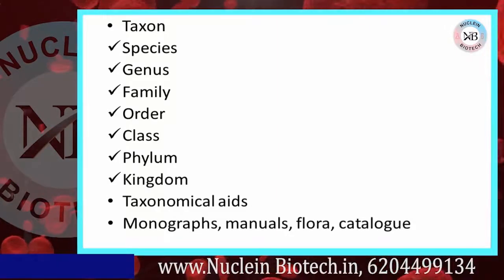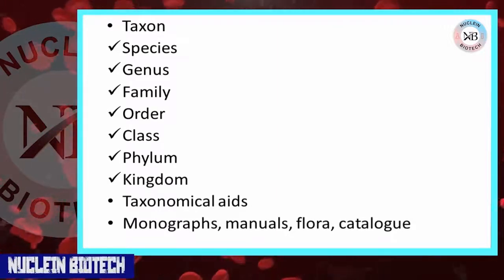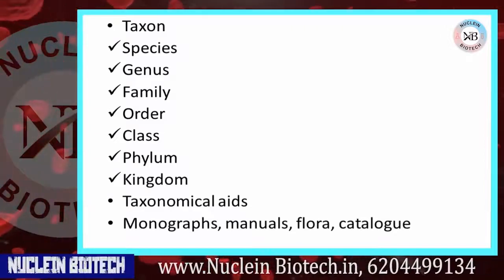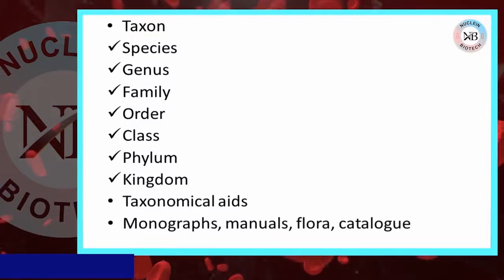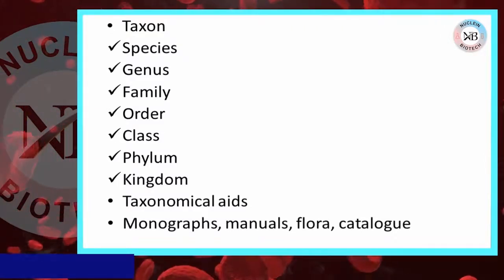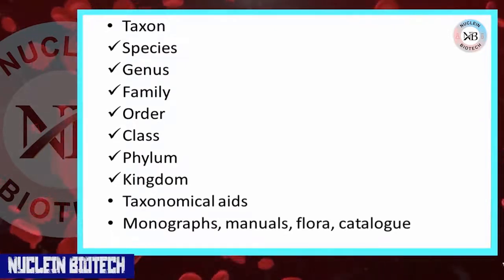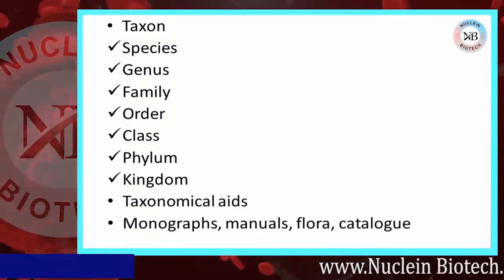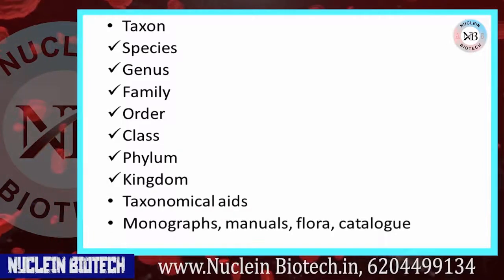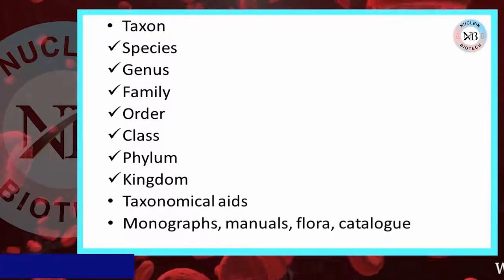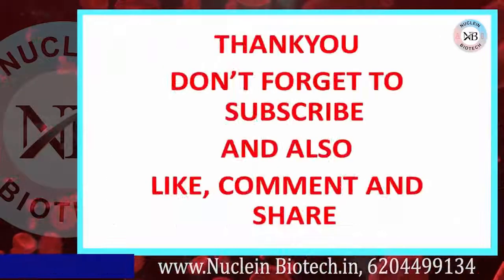Taxonomic aids refer to techniques, stored information, and processes useful in the identification and classification of organisms. These include herbaria, museums, zoological parks, and botanical gardens. Don't forget to like and subscribe to our channel.